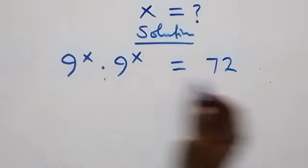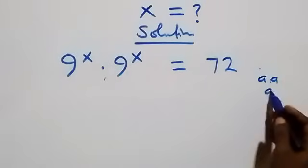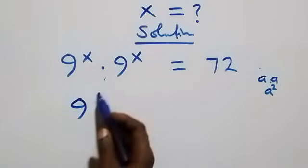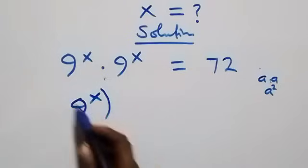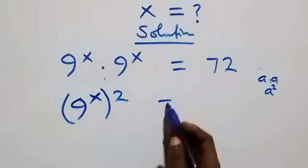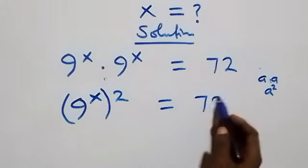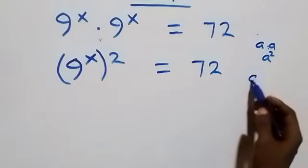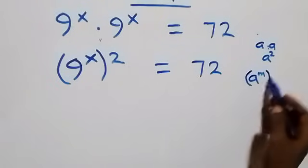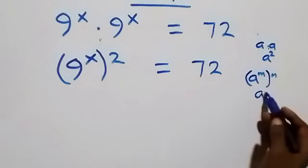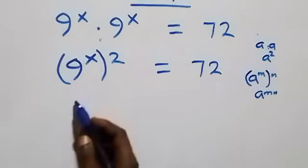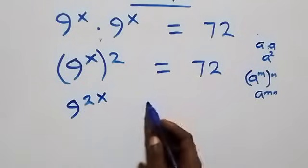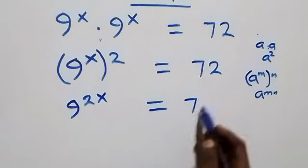This follows when we have a times a, which is the same thing as a squared. So here we can write this as 9 raised to power x, all squared, equals 72. Then applying the law of indices — when we have a raised to power n, raised to power n — the powers multiply, giving us 9 raised to power 2x equals 72.